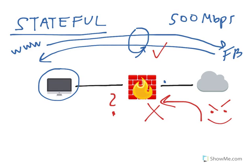We can also assume that we're doing NAT — network address translation — here. So when you see a stateful performance of 500 megabits per second for a firewall, this is what it means. Typically, you want to have a stateful performance of at least the same speed as the internet line you are leasing. For instance, if you're leasing a 1 gigabit per second internet line from your service provider and you have a stateful performance of only 500 megabits per second, then you're going to be underutilizing your internet pipe. Make sure your stateful performance is the same or higher compared to the speed of your internet line.